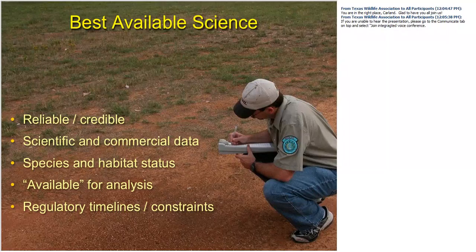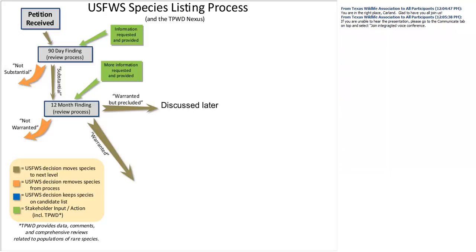As for what constitutes best available science, the services prefer peer-reviewed scientific publications conducted through state-of-the-practice methods, pending publications, and other information from credible sources. Peer-acknowledged experts can also be consulted. The timelines associated with some of these processes may not allow for all available information to come forward, but the service must evaluate the quality of information available within that timeframe and then make a determination.